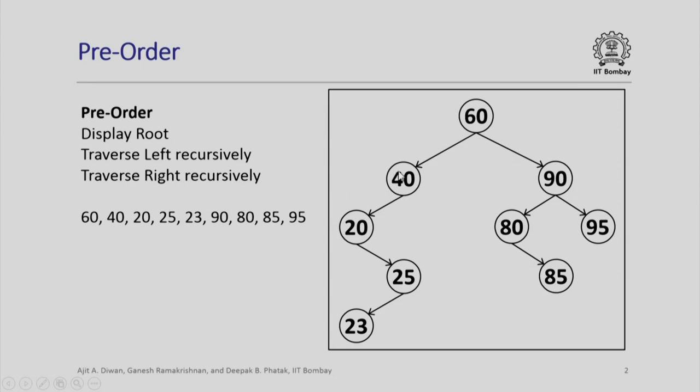So then we will display 40, 20, 25, 23 - all of them will be covered first, and then finally we traverse right recursively. Whatever the order that we get is actually equivalent to a pre-order traversal.